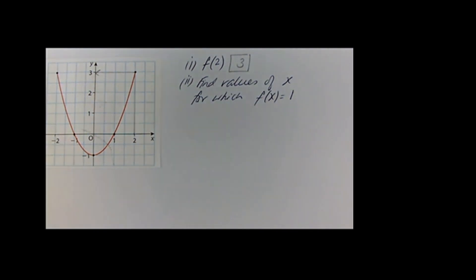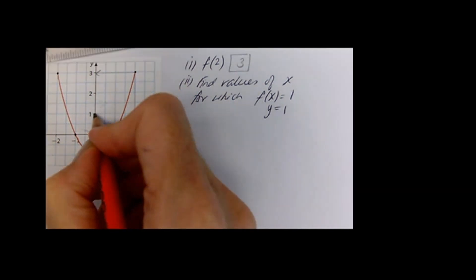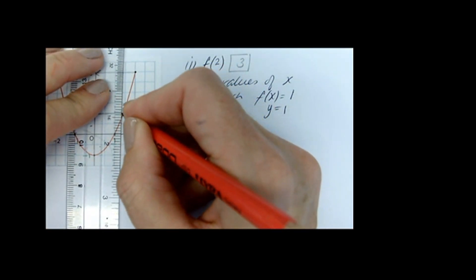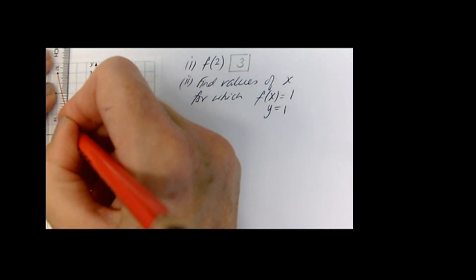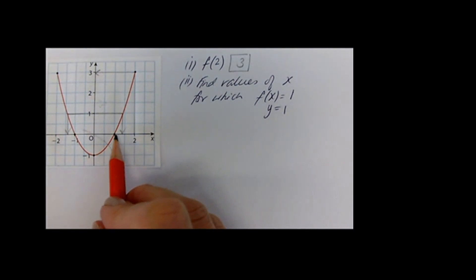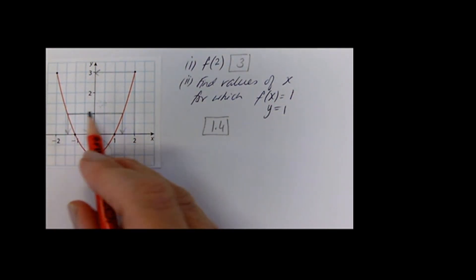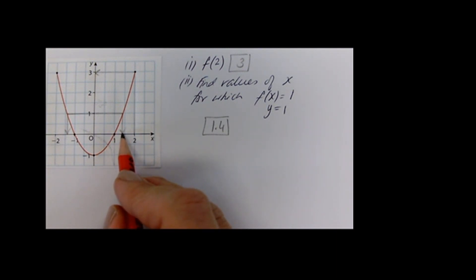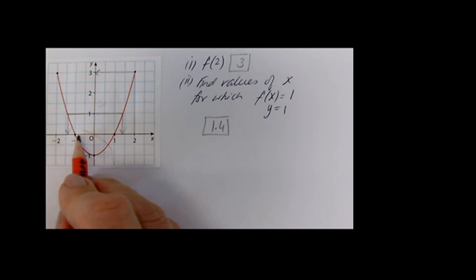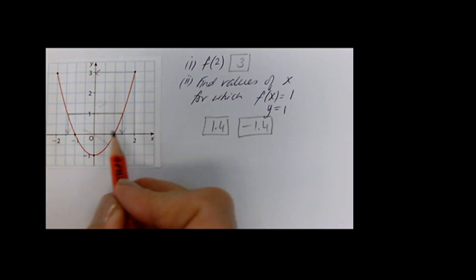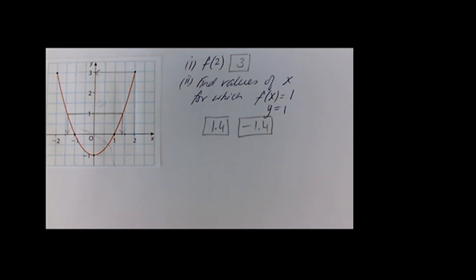Next question: values of x for which f of x is equal to 1. Remember that's the same as y is equal to 1, so we're going to 1 on the y axis and drawing a horizontal line to meet the graph. It's meeting it in two places, so we need to read off the x axis. I would say that's approximately 1.4 and minus 1.4 — it will be lenient in the exam as long as your working-out lines are there and you're making a reasonable approximation.